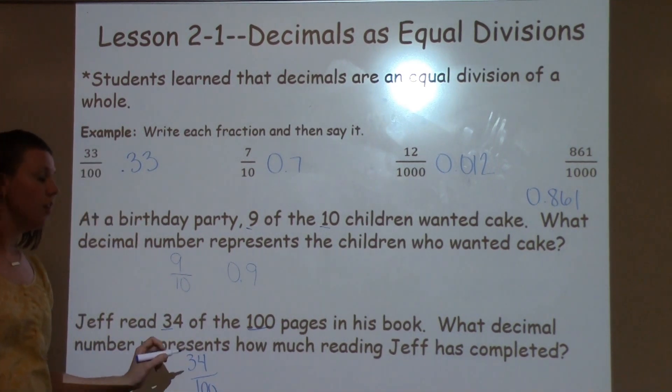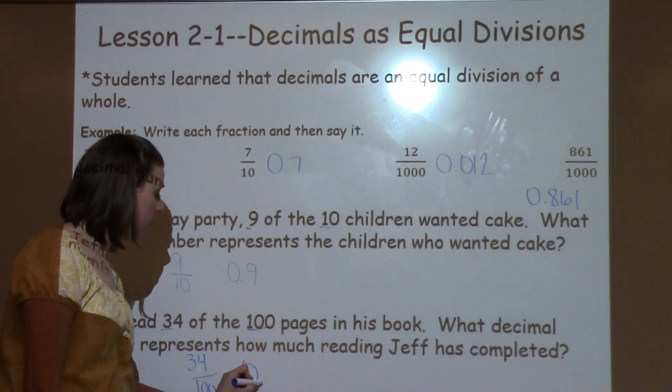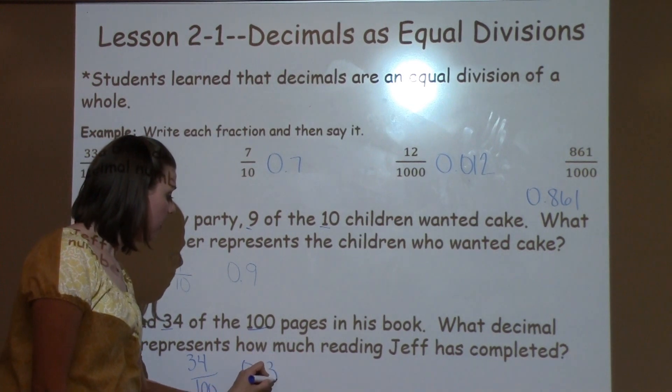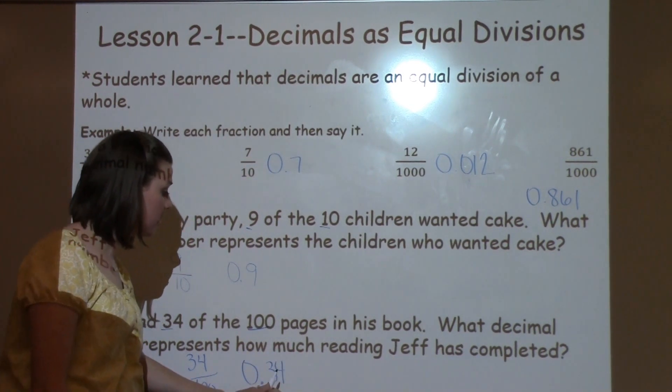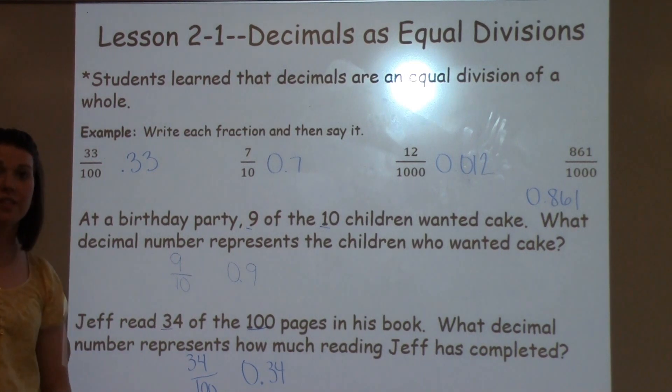34 out of 100. I'm going to make it as a decimal. I'm going to write my 0. All right, 34 in my hundredths spot. So I've got 34 hundredths. That's how much Jeff has completed.